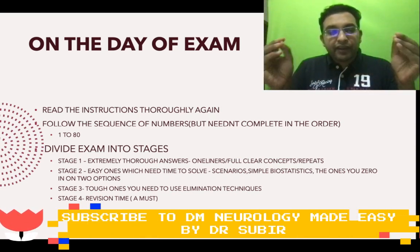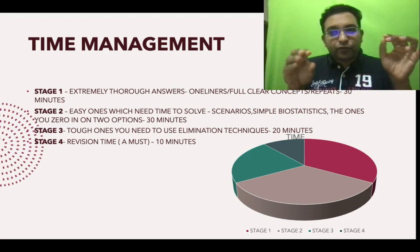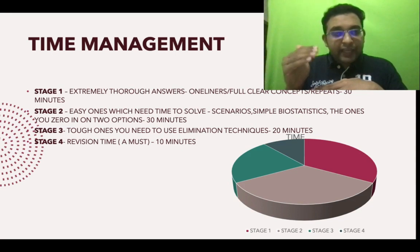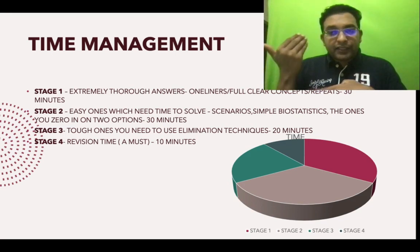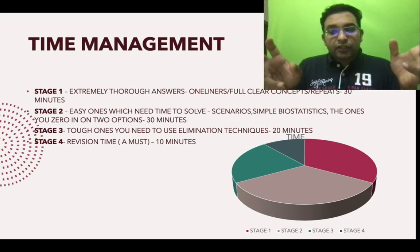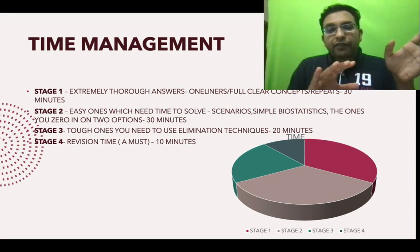Stage 4 is a must in every exam - revision time. Time management: stage 1 for one-liners and repeats, give only 30 minutes. Stage 2, again 30 minutes. Stage 3, the tough ones where you need to use your brain to eliminate, spend 20 minutes. Revision time is a must, 10 minutes. That's the time when you should plan to put the options in the computer.